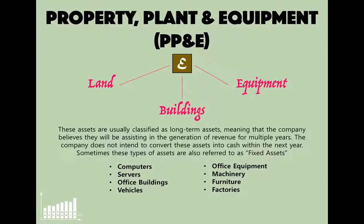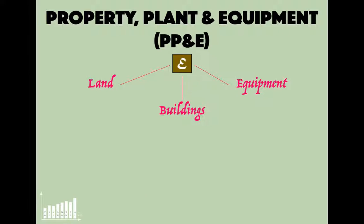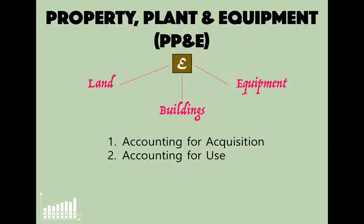When we're concerned with long-term assets, we have to think about three things: accounting for their acquisition — when we purchase or construct them — accounting for their use over the multiple years we expect to use them, and understanding the accounting issues involved in their disposal when we're done with them.